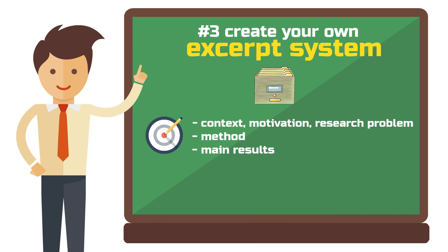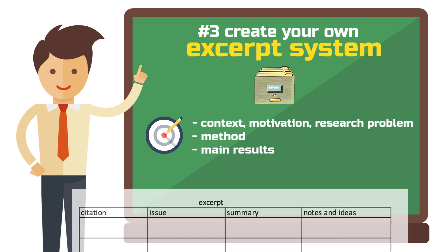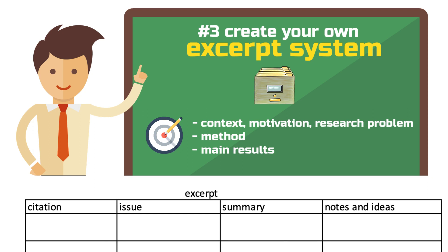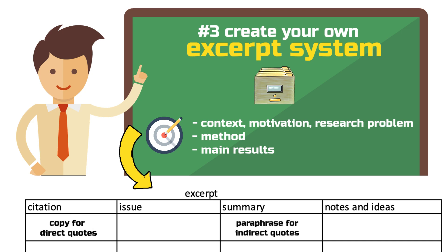But you also want to have the contents ready to be cited or paraphrased for your own paper. To achieve this, you should create an entry in your excerpt document for each of the goals you have while reading papers. Excerpts are extracts from scientific texts that you can copy for direct quotes and paraphrase for indirect quotes. You can also add your own thoughts, notes and interpretations to these extracts.